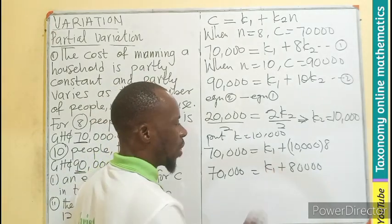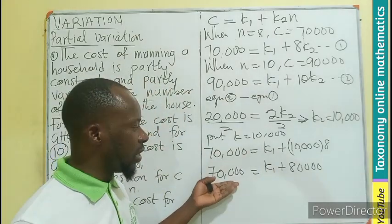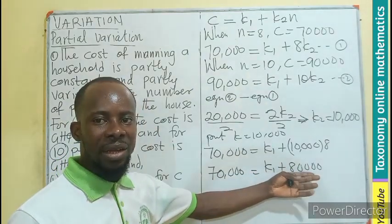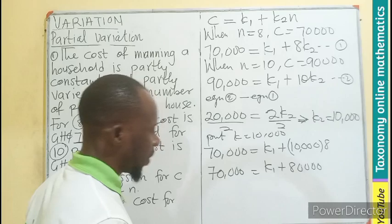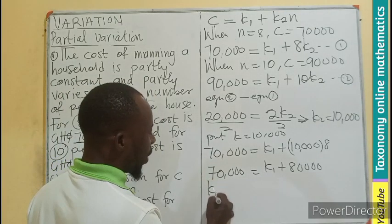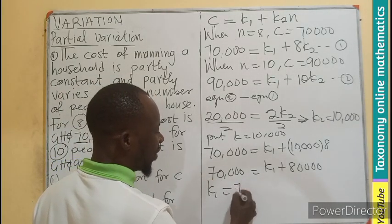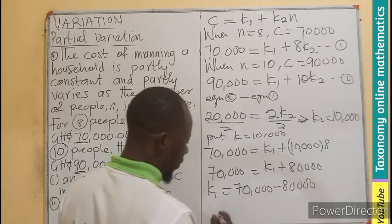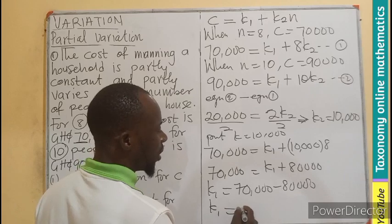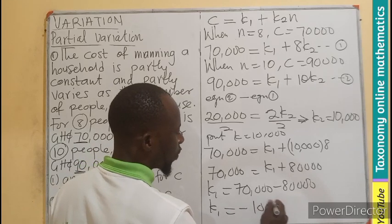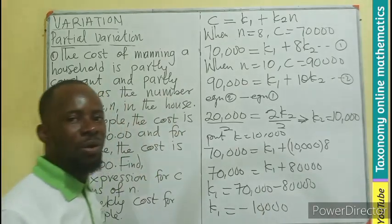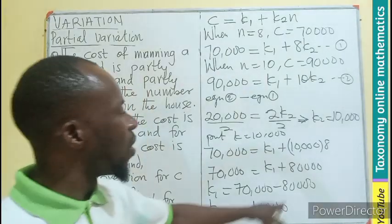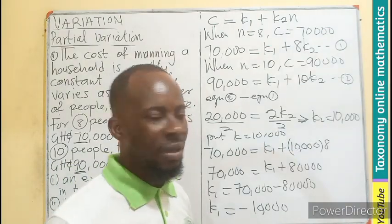This is a simple linear equation. We're going to subtract 80,000 from both sides. k1 equals 70,000 minus 80,000, which gives k1 equals negative 10,000. So the value of k1 is negative 10,000 and the value of k2 is 10,000.